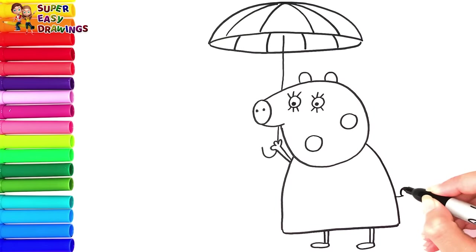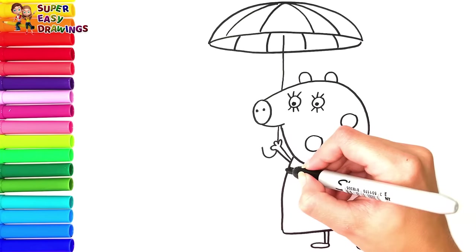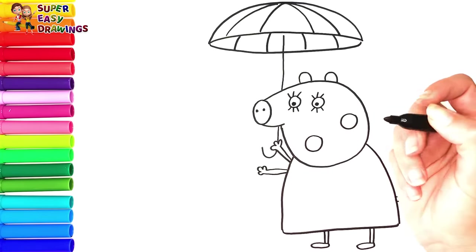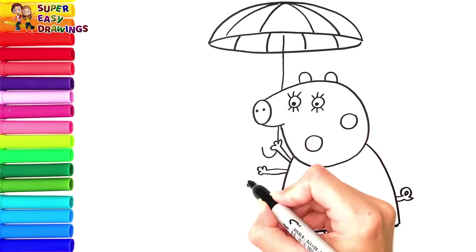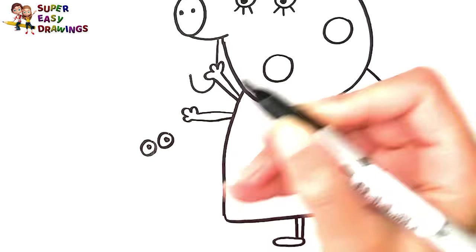Now I draw her curly tail and her other arm. I draw George Pig's eyes. Then his nose.